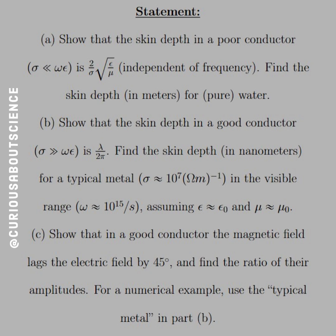show that the skin depth in a good conductor, where sigma is much greater than omega epsilon, is lambda over 2 pi. Find the skin depth in nanometers for a typical metal, sigma is approximately 10 to the 7, in the visible range with omega equal to 10 to the 15 radians per second, assuming epsilon is approximately epsilon naught and mu is approximately mu naught.